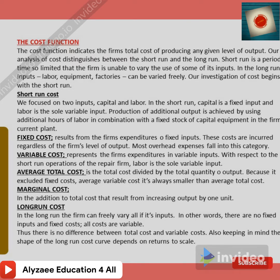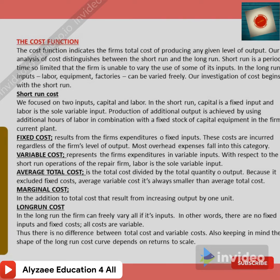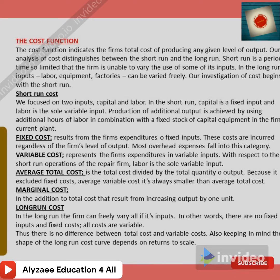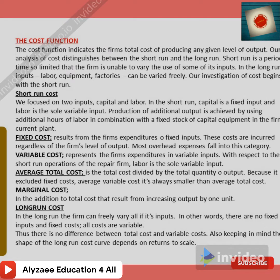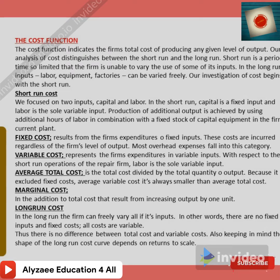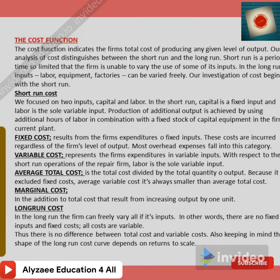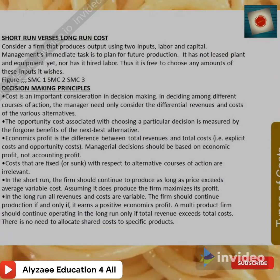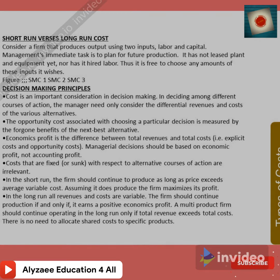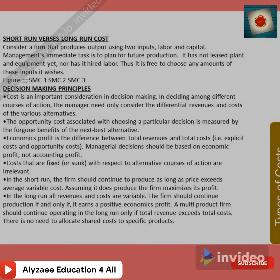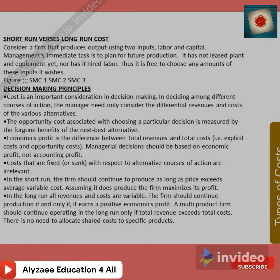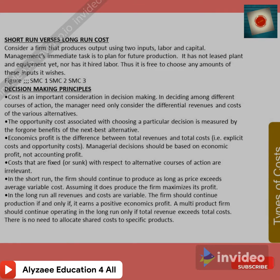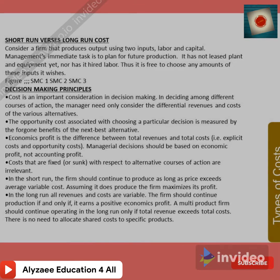In the long run, the firm can freely vary all its inputs. There are no fixed inputs and no fixed costs — all costs are variable. Thus there is no difference between total cost and variable cost. The shape of the long run cost curve depends on returns to scale. Consider a firm producing output using labour, capital, and management: if it has not yet leased plant and equipment, nor hired labour, it is free to choose any amount of these inputs.